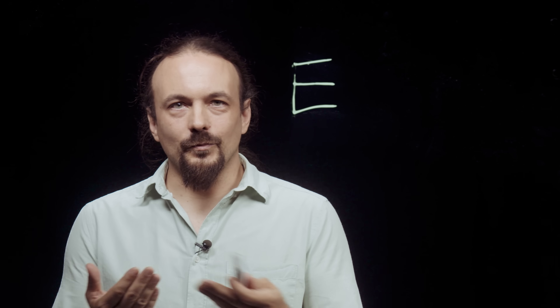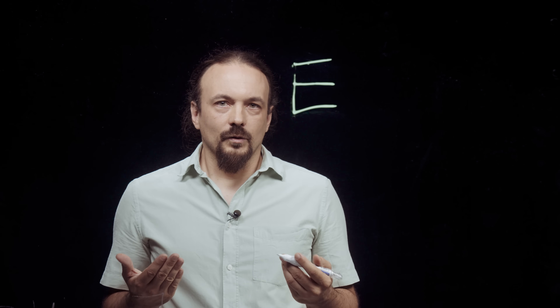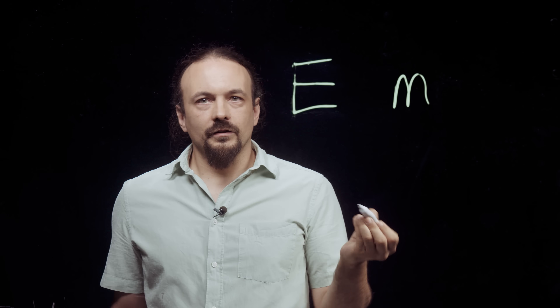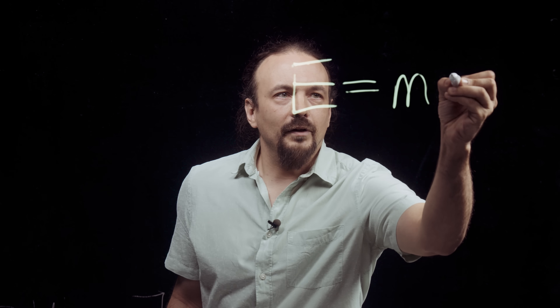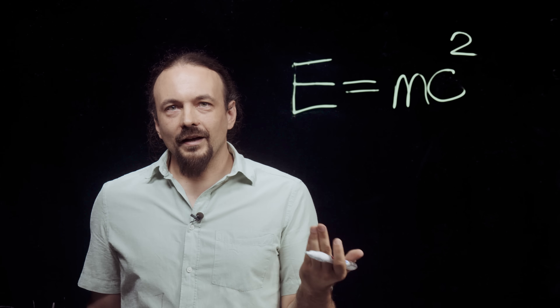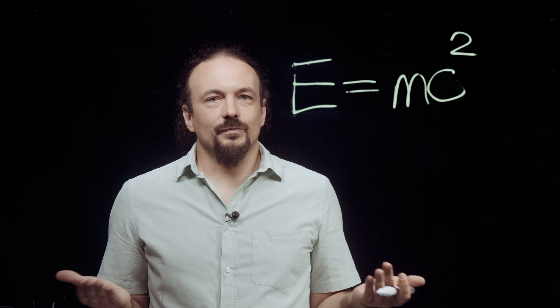Energy comes in various forms. For example, objects that move have what we call kinetic energy, from the Greek word kinesis, meaning motion. But we also know from Einstein that every object that has mass has an energy corresponding to this mass, equal to that mass multiplied by the speed of light squared. So mass is in a sense equivalent to energy — it's a form of energy that objects possess. Different forms of energy can transform into one another in various processes, just as long as the total energy is conserved.